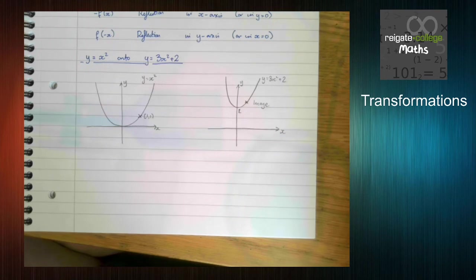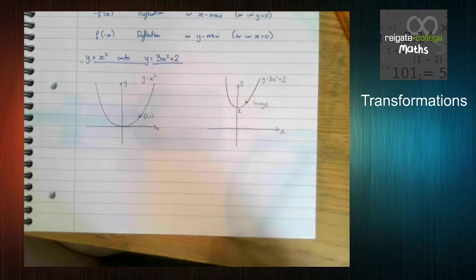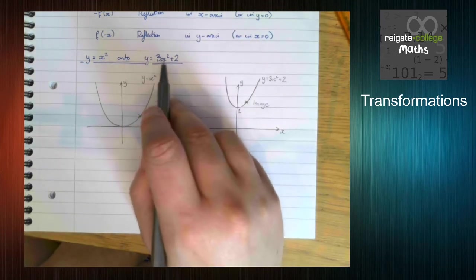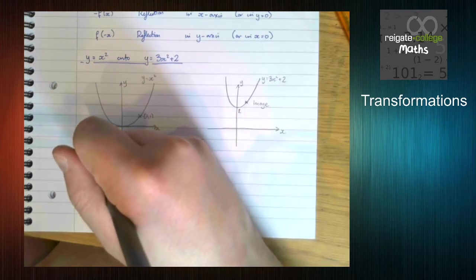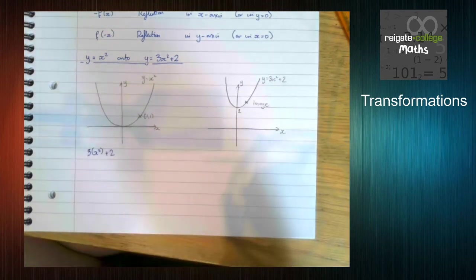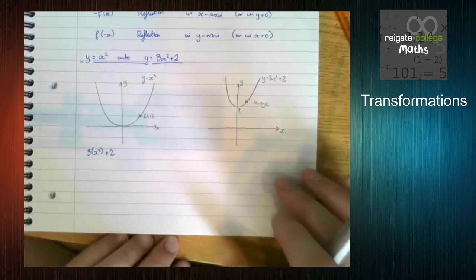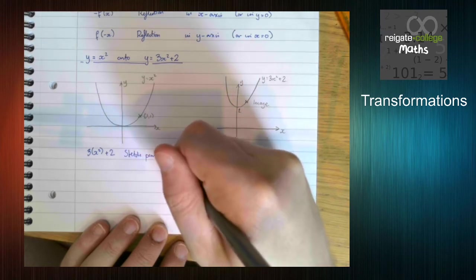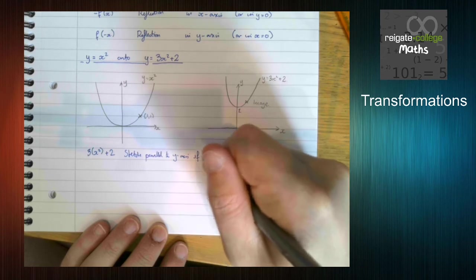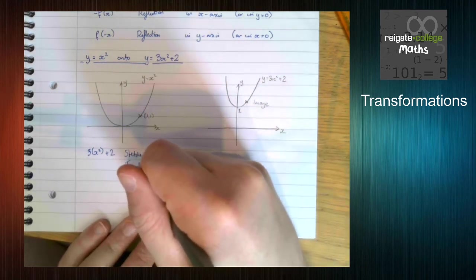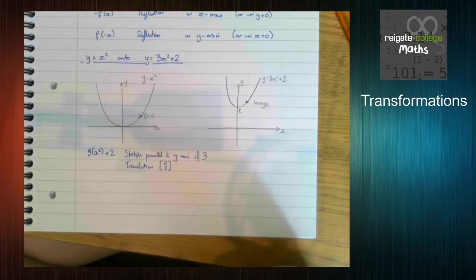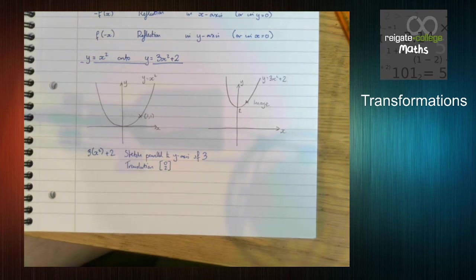So what are the transformations we're looking at? Well, we can see we've got a stretch in the y direction, because it's 3 brackets x squared plus 2. So we've got a stretch parallel to the y axis scale factor 3. And we have a translation 0, 2. So what order do we do these in? Because as I said before, the order is quite often important.